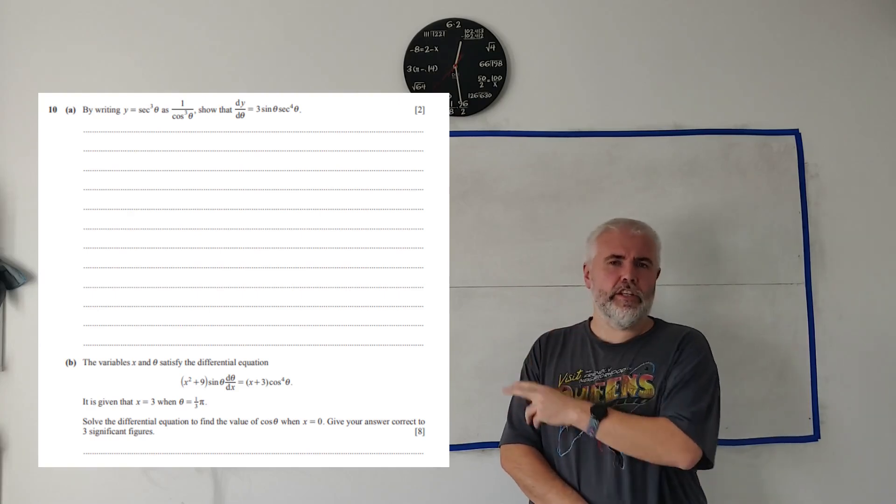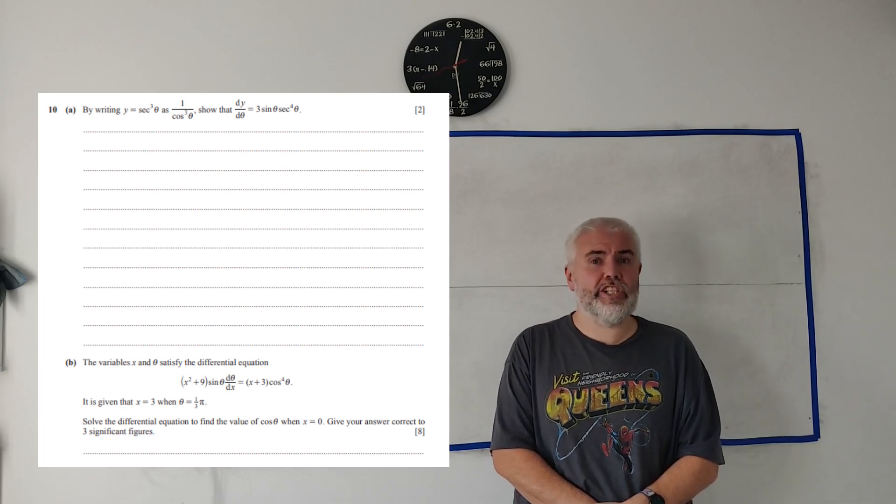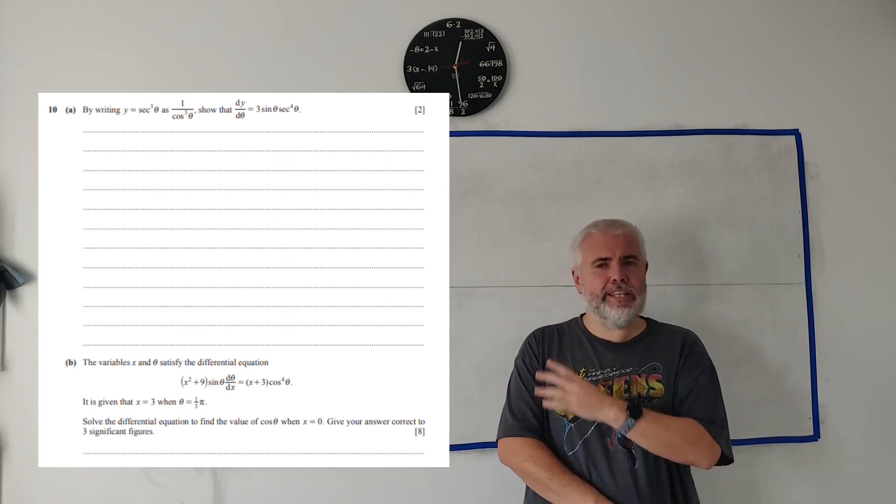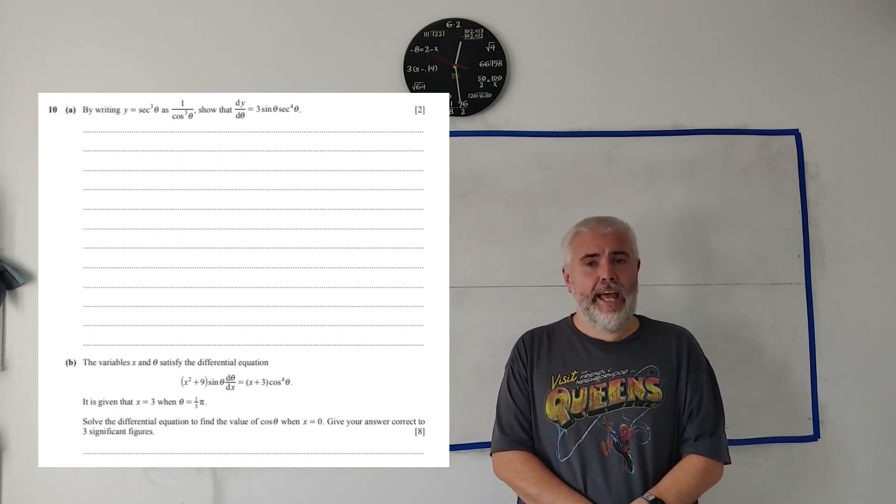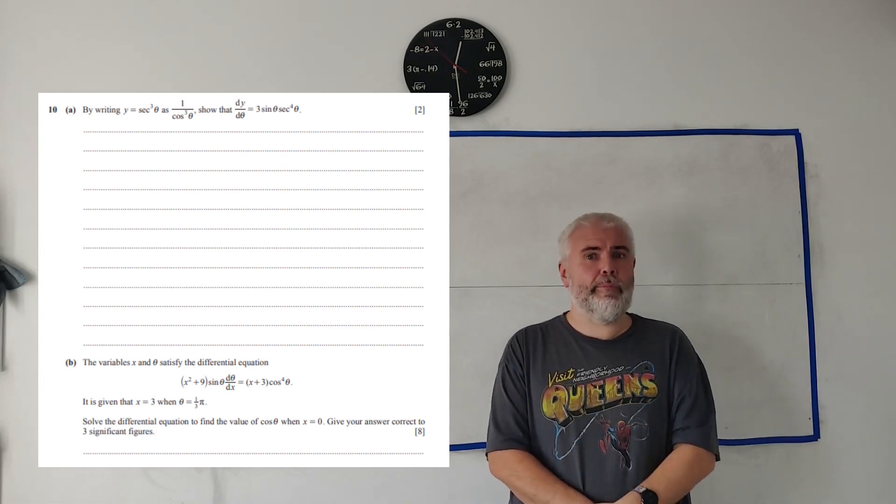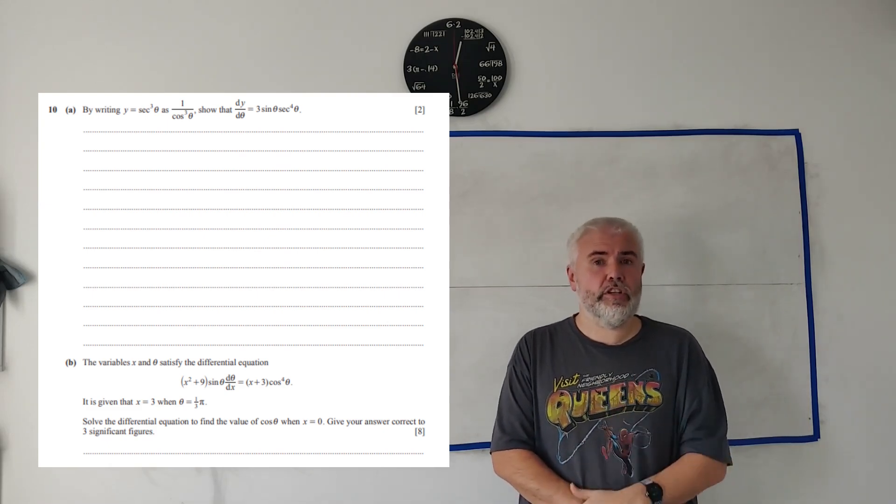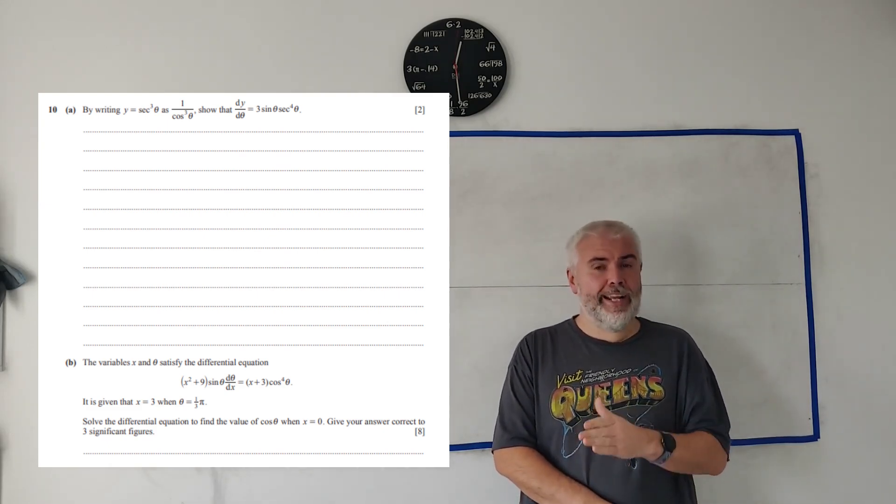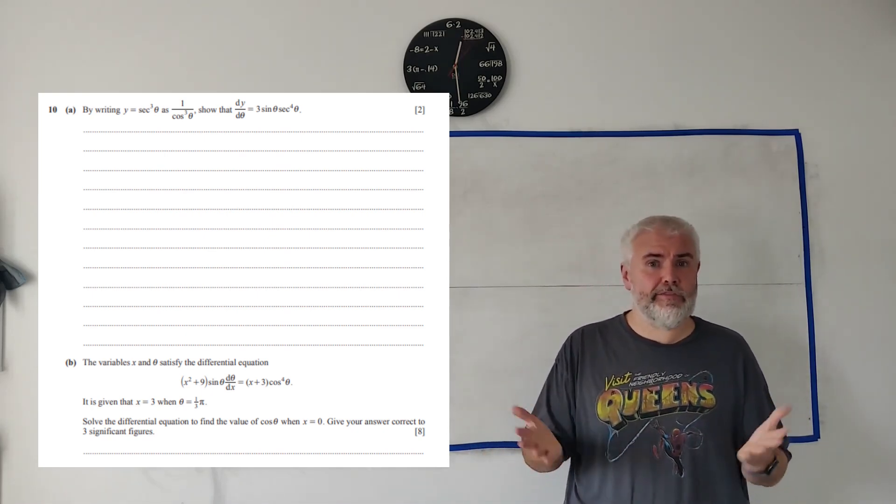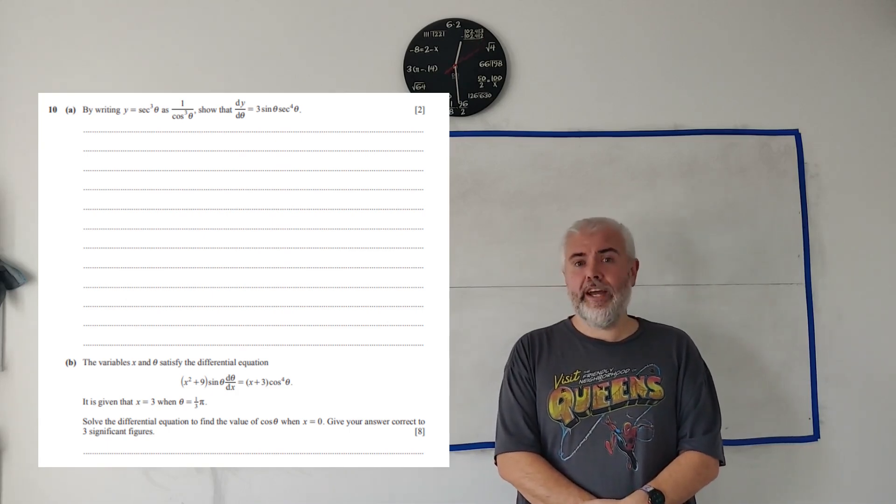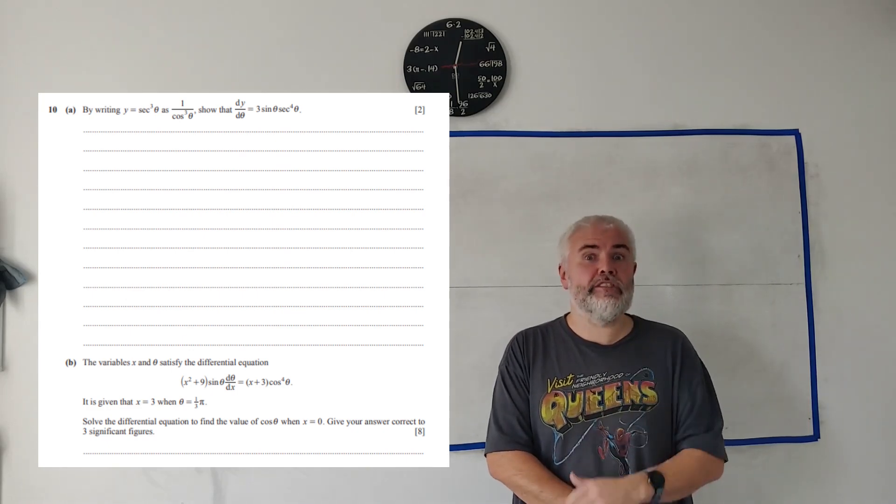In this video, I'll be working through a question from paper 3.2 from 2024 of the Cambridge A-Level exam. If you're looking for a different question from this paper, check the description for a playlist link. I'll be doing this on a whiteboard, hopefully just like your teacher does. But remember, we're on YouTube, so take advantage of that. Use the pause, rewind and fast forward buttons. If you find this video useful, I would greatly appreciate liking, subscribing or sharing.